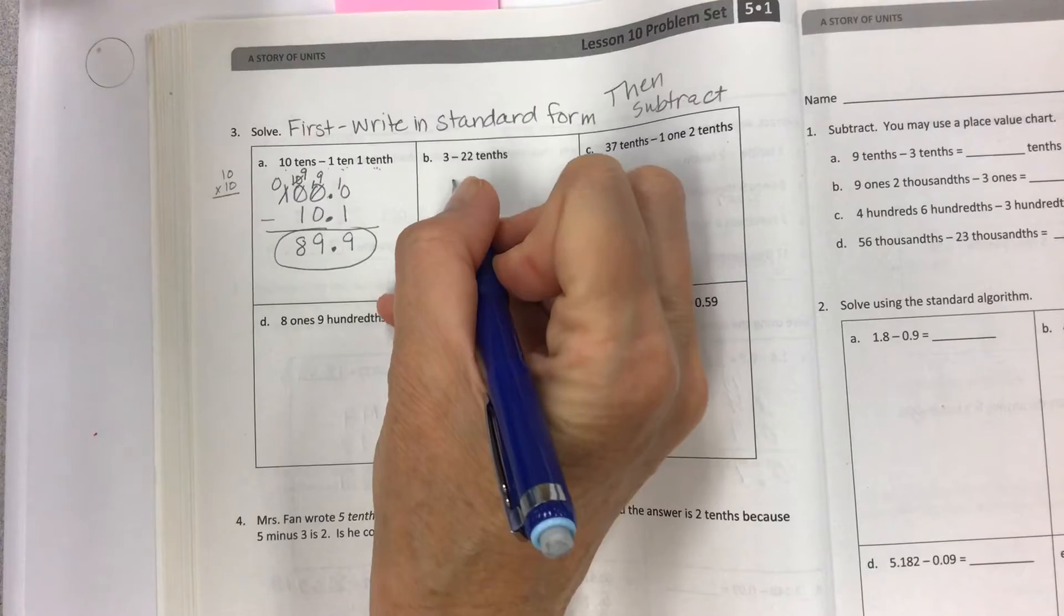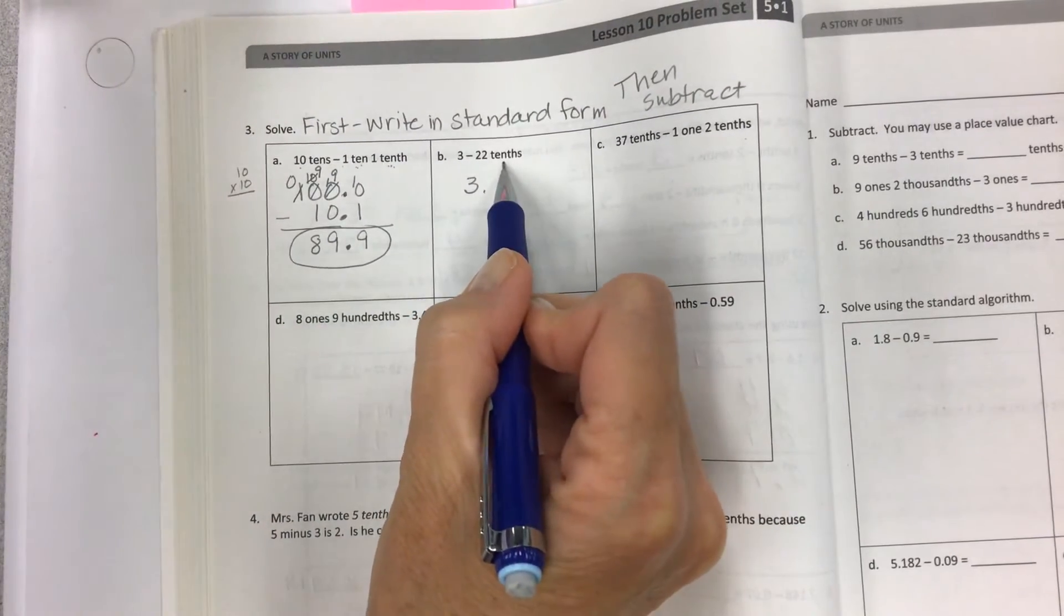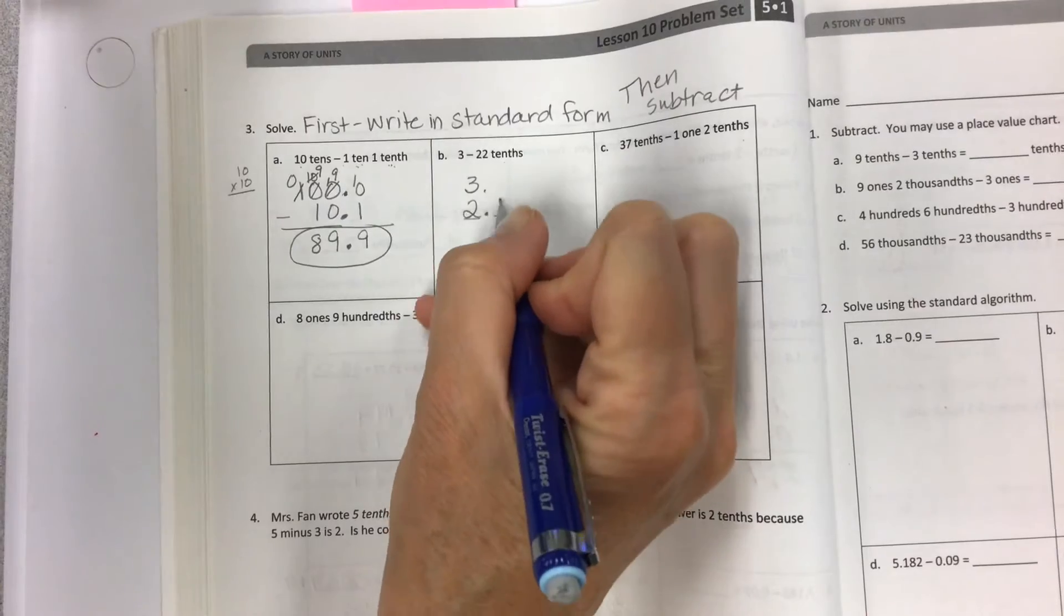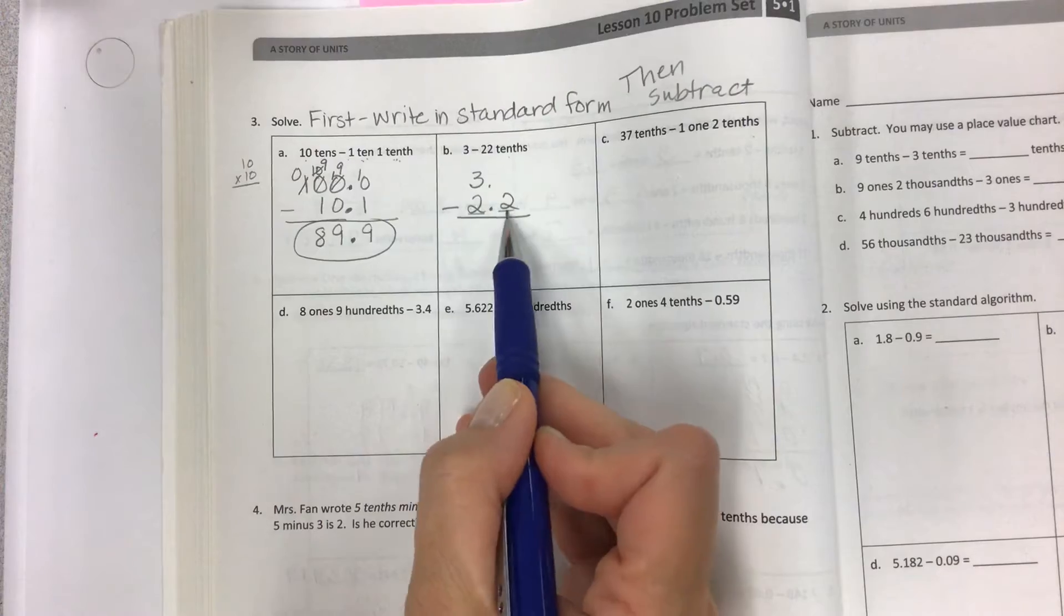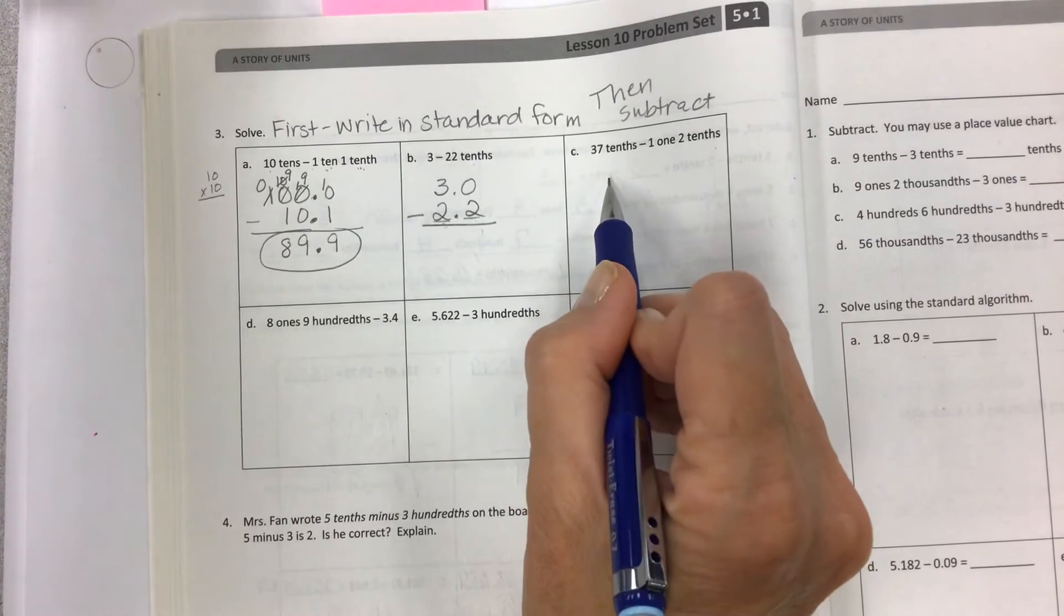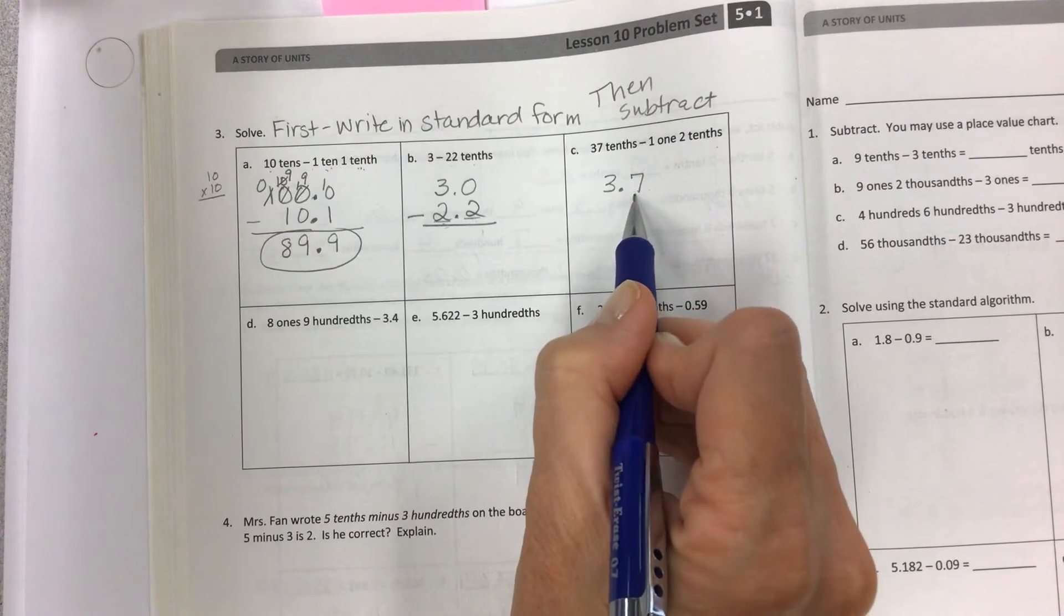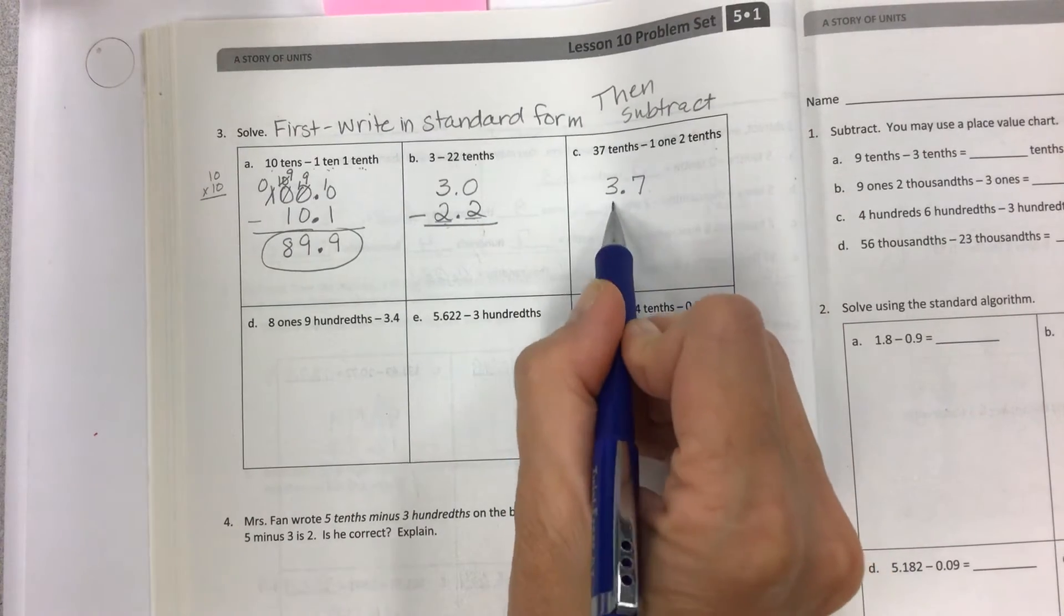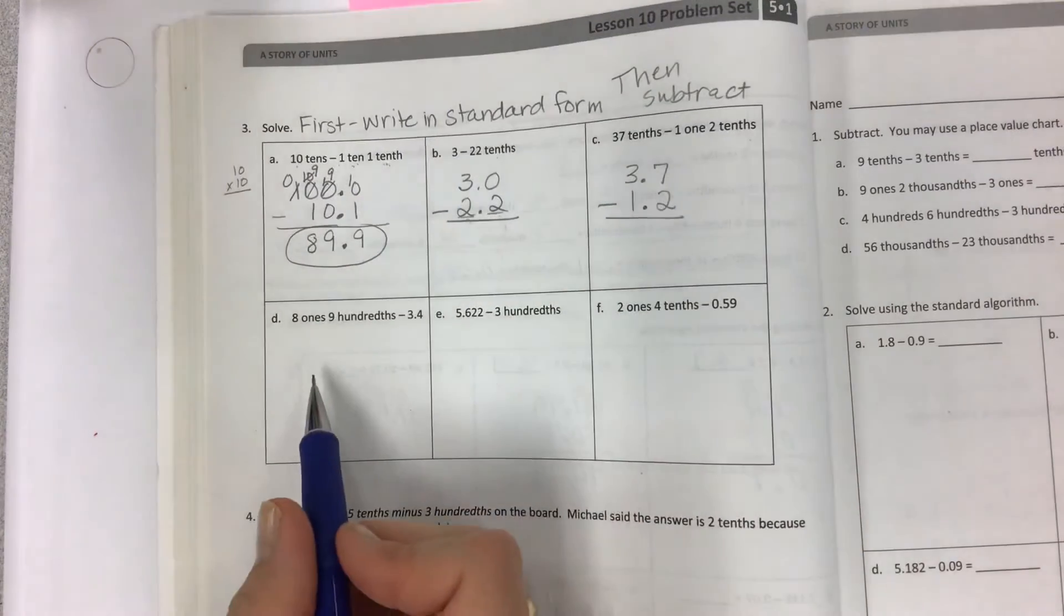Now here I have three. It's just a plain old three. Three ones. Twenty-two tenths. I need to finish here. That's going to give me this number. 3 minus 2.2. So this is how you'll set it up. This one is 37 tenths. And like we did here, it's going to be 3.7 minus 1, 1, 2 tenths, 1.2. So set that up and solve.